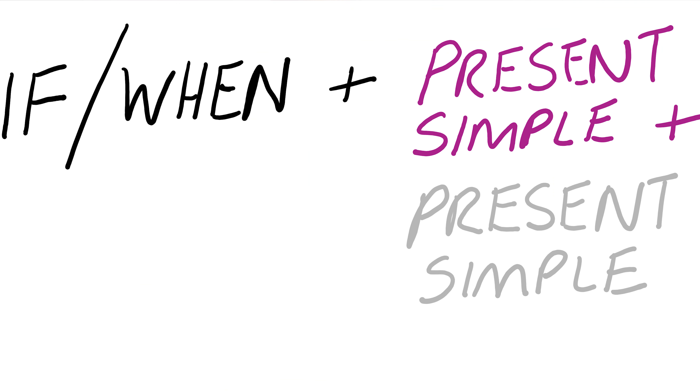We make the zero conditional by using an if clause and another clause. The second clause depends on the if clause. So we've got: if plus present simple plus present simple - that should be on your screen somewhere. You can use other present tenses and I will explain how we do that later on in the video, so watch till the end if you want to see that.